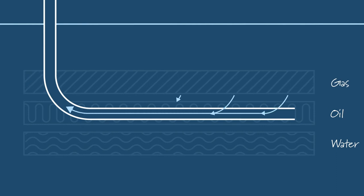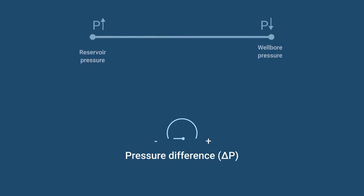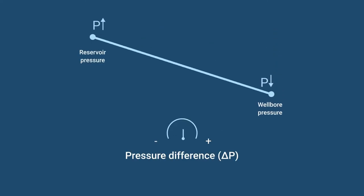In order to get the well to flow from the reservoir and into the wellbore, there has to be a pressure difference between the two. The higher pressure must reside in the reservoir and the lower pressure in the wellbore.